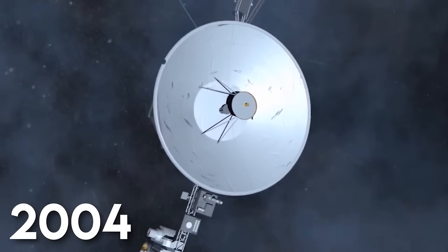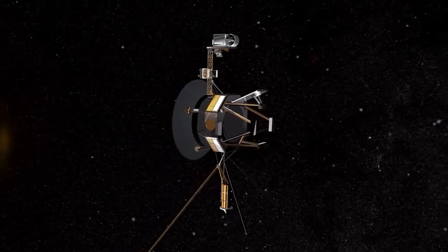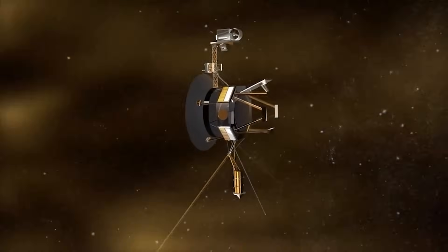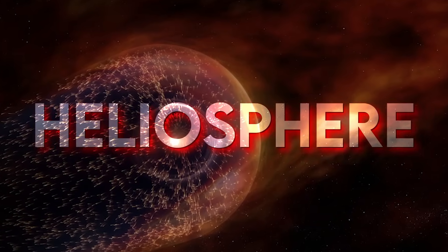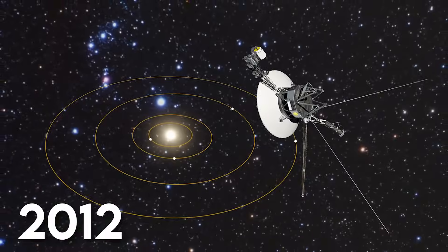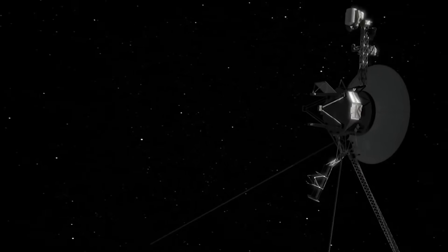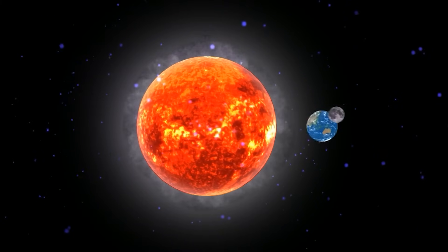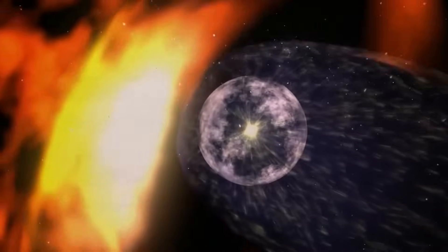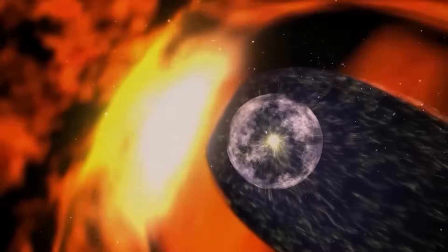By 2004, Voyager 1 had crossed the termination shock where the solar wind slows. Its observations reshaped models of the heliosphere. Then, in 2012, Voyager 1 became the first emissary to cross into interstellar space. At over 125 times the Earth-Sun distance, the probe had exited the Sun's sphere of influence.